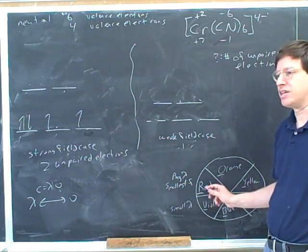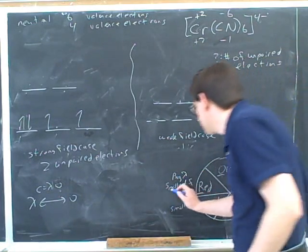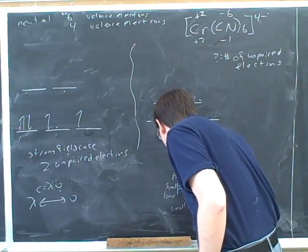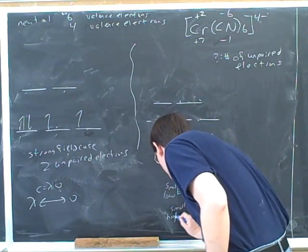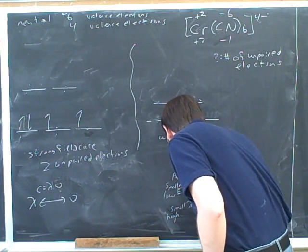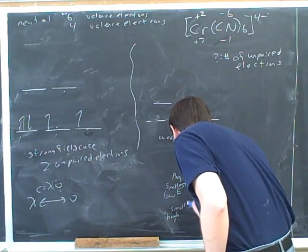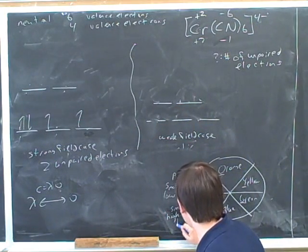All right. Now, right here we said red has the smallest frequency. Does that mean that it's high energy or low energy? Low energy. Good. It's good that you know that. Because with Planck constant, it will be directly related to each other. Great. That's good that you knew that.